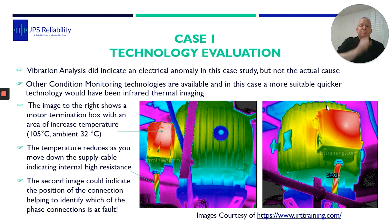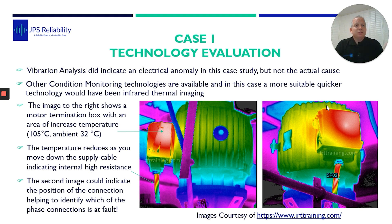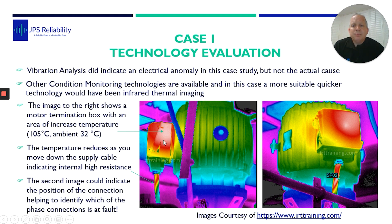Here's an image I got from my good friend Austin Dunn from the IRT trainer. So if I had a thermal camera on this particular job and scanned the motor, this is what I would have seen for sure. This shows the terminal box at 105 degrees with 30 degrees ambient. And one important thing to notice: as the temperature comes down away from the terminal box, it reduces. So you know it's not overloading — there's a problem right there at the connection.